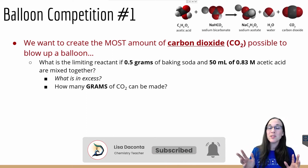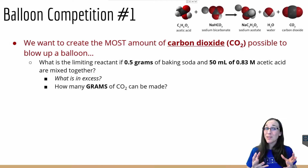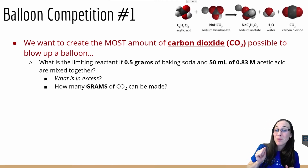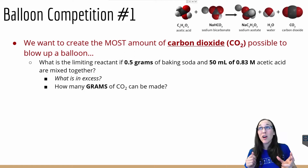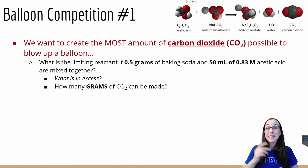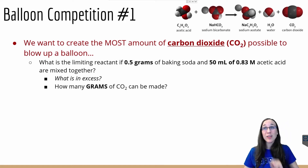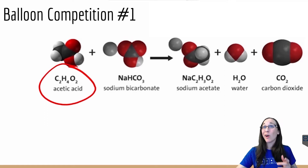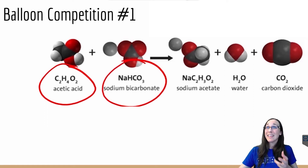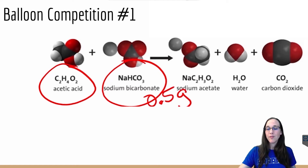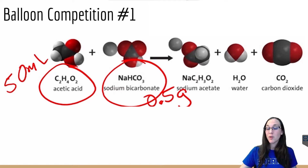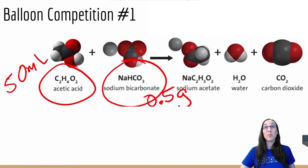Before we can do so, we must do some math. What is the limiting reactant if we have half a gram of baking soda, and 50 milliliters of 0.83 molar — that's moles per liter — acetic acid? So what the problem has now given us is two values for our two different reactants: our acetic acid, i.e. our vinegar, and our sodium bicarbonate, i.e. our baking soda. We have half a gram of this, and we have 50 milliliters of this vinegar at a concentration of 0.83 molar.